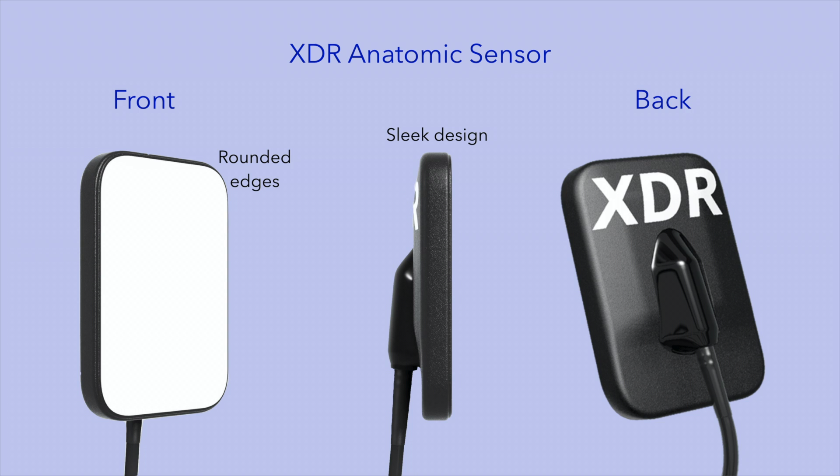At the UCLA School of Dentistry, we use CMOS sensors from XDR. As dental students, this is what you will use to perform imaging on your patients. The front side of the sensor is white and faces the X-ray source. The edges of the sensor are rounded to maximize patient comfort.